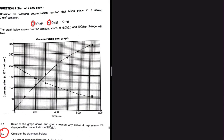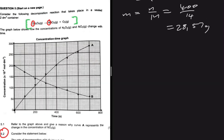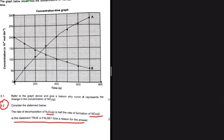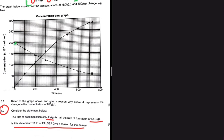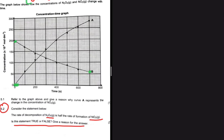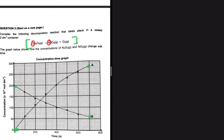The question tells us to consider the following decomposition reaction taking place in a 2 dm³ container. We're given an equation, and the graph shows the concentration of N₂O₅ and NO₂ changing with time. One graph starts at 200 and goes down, while the other starts at zero and goes up. The question asks us to give a reason why curve A represents the change in concentration of NO₂.